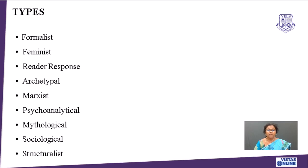And then structuralist — this is again an important point of discussion, because structuralists analyze a literary text by grammatical structure, not as a whole meaning, but how the sentences are constructed. For example, if you construct a sentence in active voice, then meaning is understood in active voice. If you construct a sentence in passive voice, then the meaning is understood in passive mode. So that is the types of approaches to literary interpretation.